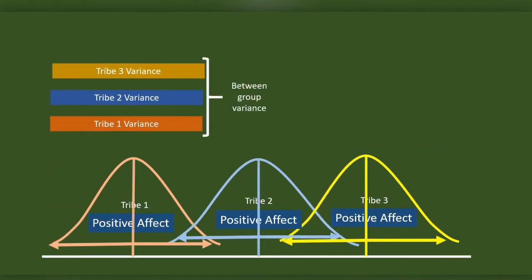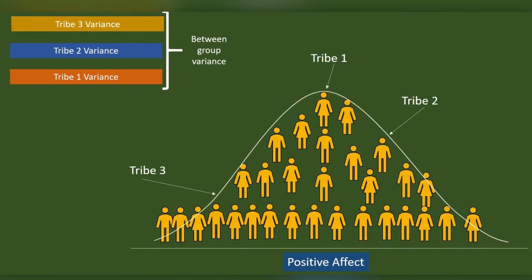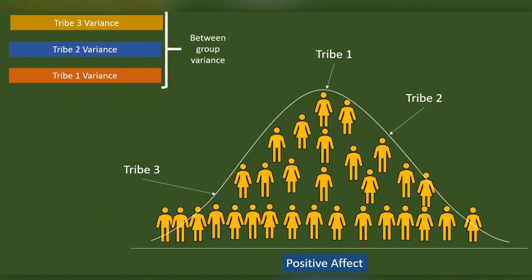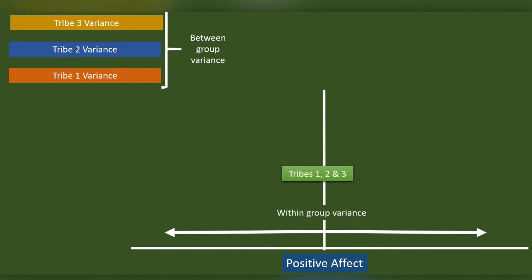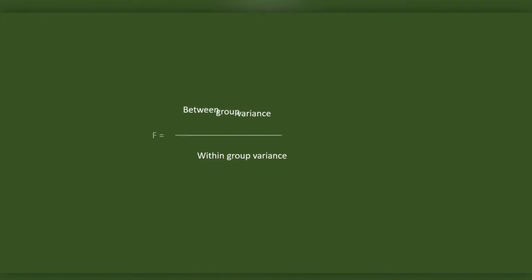While doing ANOVA, the first thing we are concerned with is the variance in the distribution of the positive affect between the groups. The second important thing we consider is the variance of the distribution of the positive affect within the group. ANOVA's coefficient is represented by F, which is equal to between-group variance upon within-group variance.